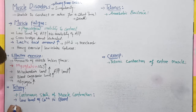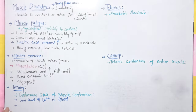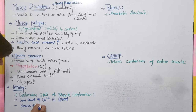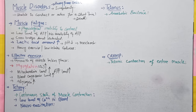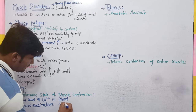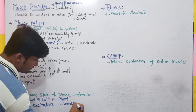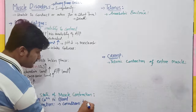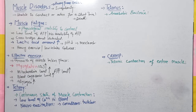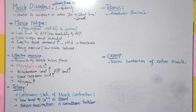Jab blood ke andar calcium ka level low ho jaata hai to yahan par neuro-excitation ho jaati hai — neurons excite kar jaate hain. Is se convulsions produce hote hain, jhatke lagte hain. Ya to jhatke lagenge ya phir baar baar muscle continuously contract and relax karna shuru kar dega.